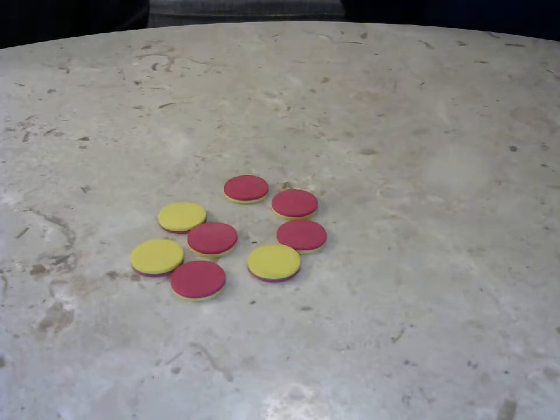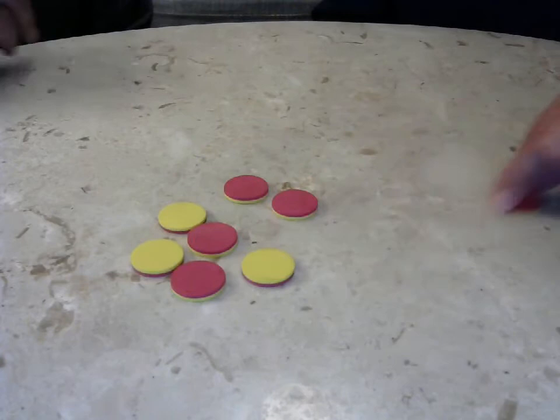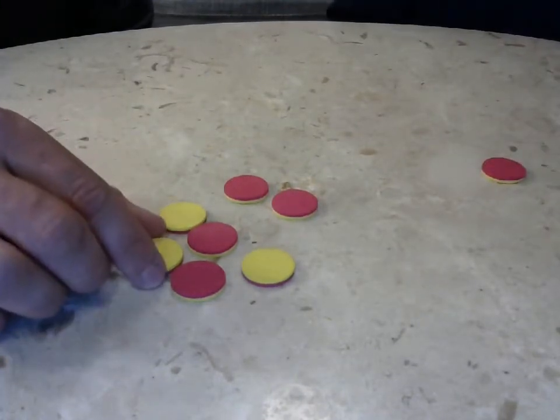So Steven and I are going to play once and you will see what it looks like. I'm going to go first and I'm not really sure what my strategy is yet. So I'm going to take one counter to start with. I'm going to take one, two.